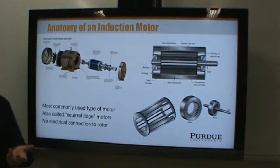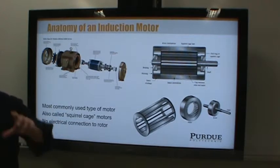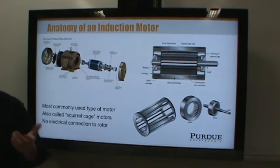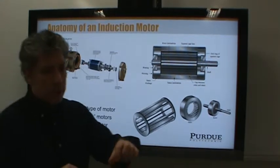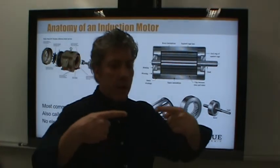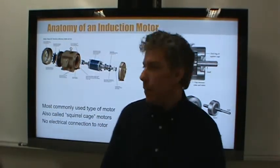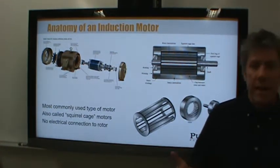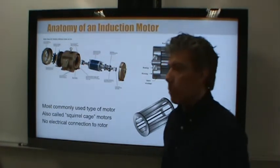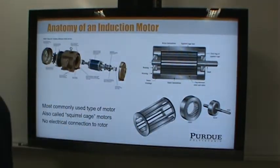A way to think about this is that all motors, whether AC or DC, are basically generating magnets that oppose each other. Just like when you take two permanent magnets and put the north end against the north end, you can push one with the other — that's all that's going on here. It's just a whole lot of big magnets, so you end up with a significant amount of torque and power output.